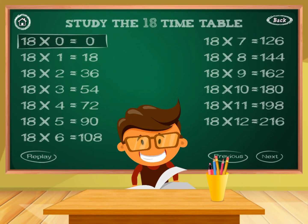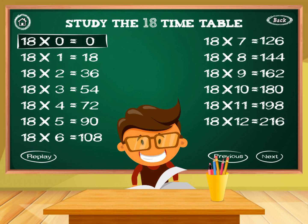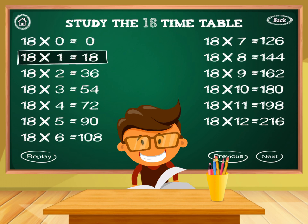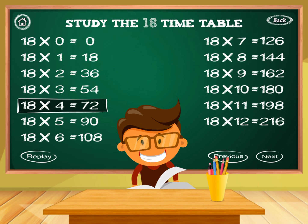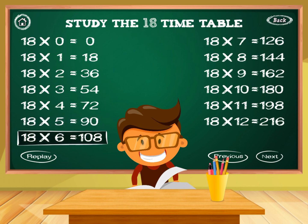Timetable of 18. 18 times 0 equals 0. 18 times 1 equals 18. 18 times 2 equals 36. 18 times 3 equals 54. 18 times 4 equals 72. 18 times 5 equals 90. 18 times 6 equals 108.